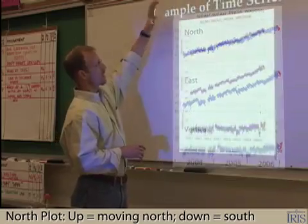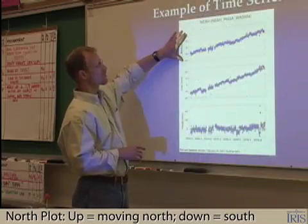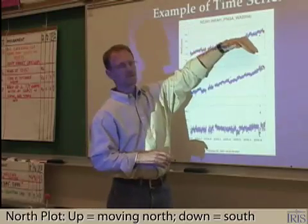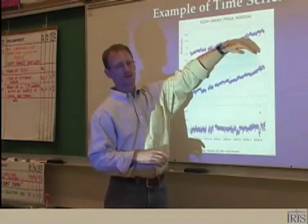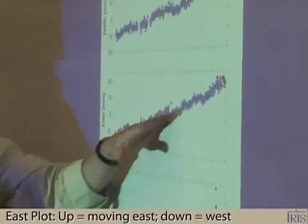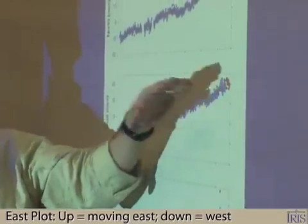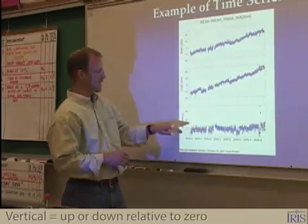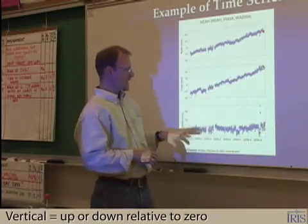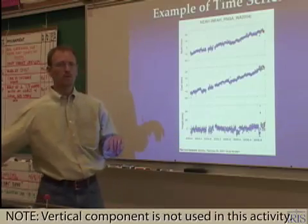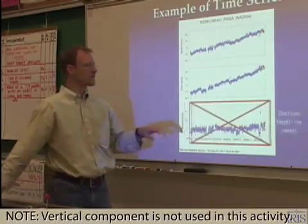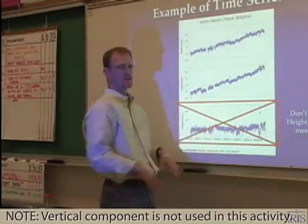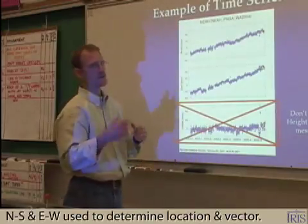How it works is that the north plot shows: if it's going up, it's moving north; if it's moving down, it's moving south. On the east plot, if it's moving up it's east, down is west, and height is simply up and down. Height usually is not used in this activity because it's really messy — it's much harder to determine up and down motion with satellites.